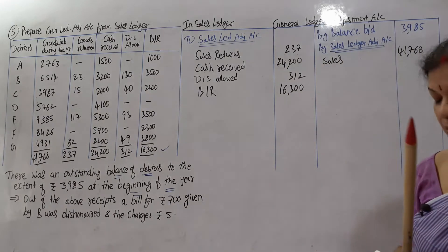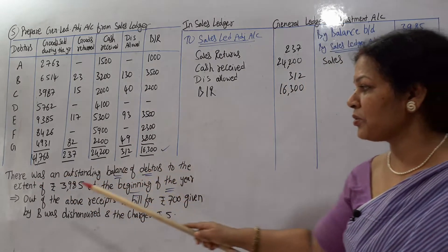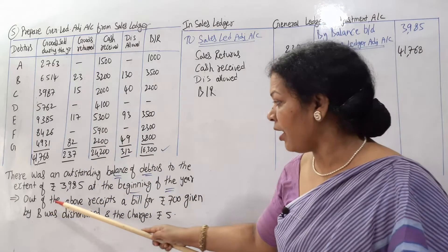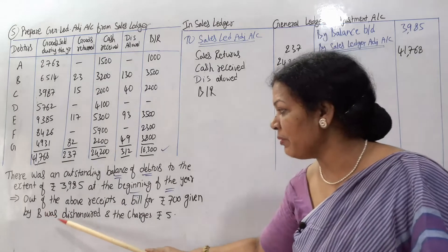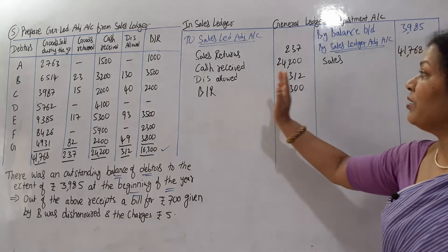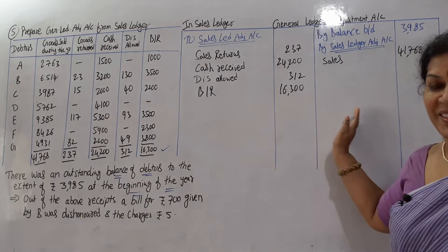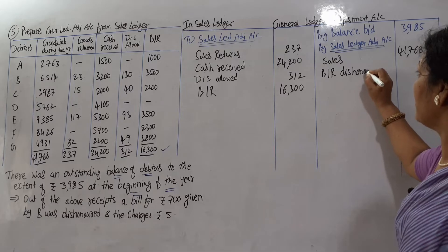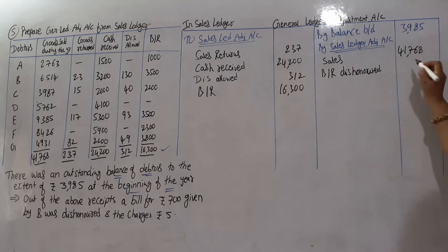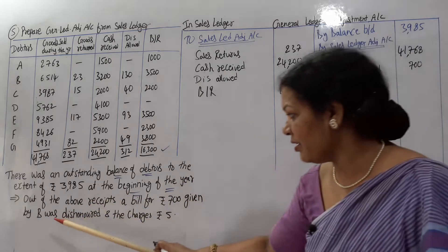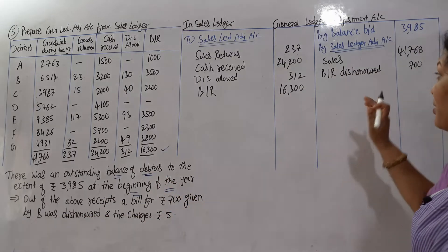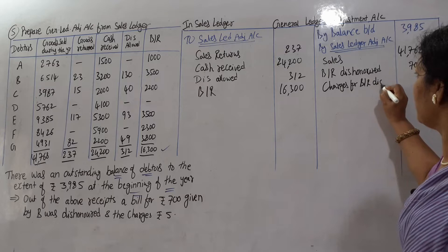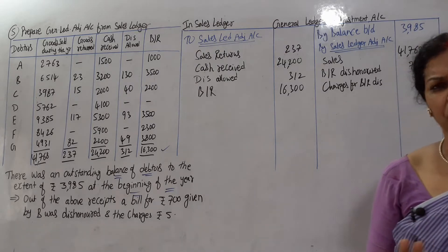Now the adjustments. Out of the above receipts, a bill for 700 given by B was dishonored. When we received the bill we wrote it on the debit side, so dishonor comes on the credit side — bills receivable dishonored: 700. There are also charges of 5 rupees, written on the same credit side. That completes the entries — the problem is over.